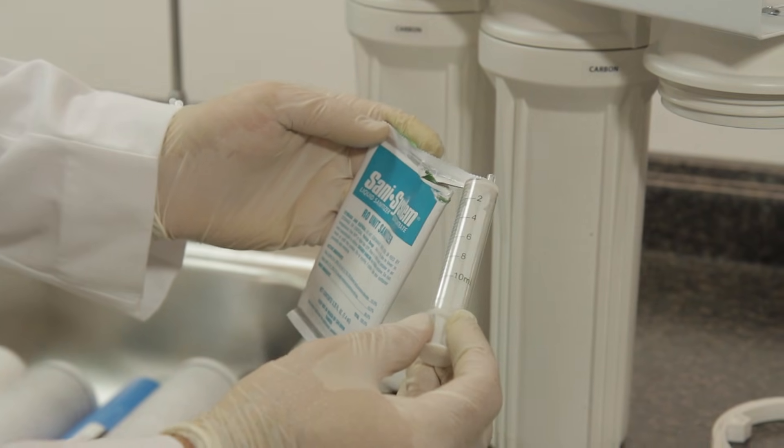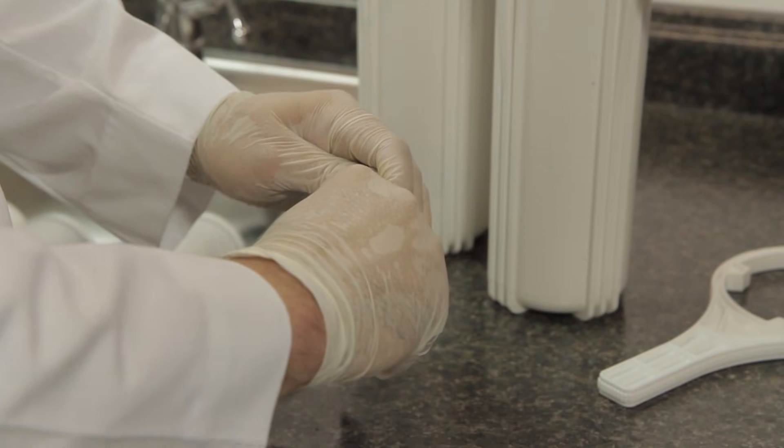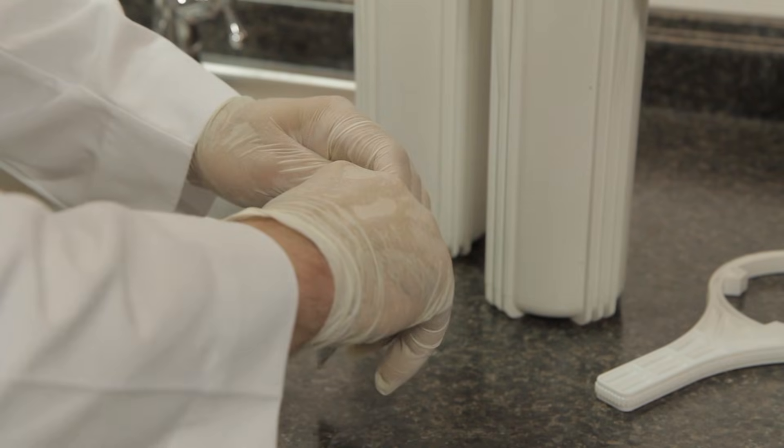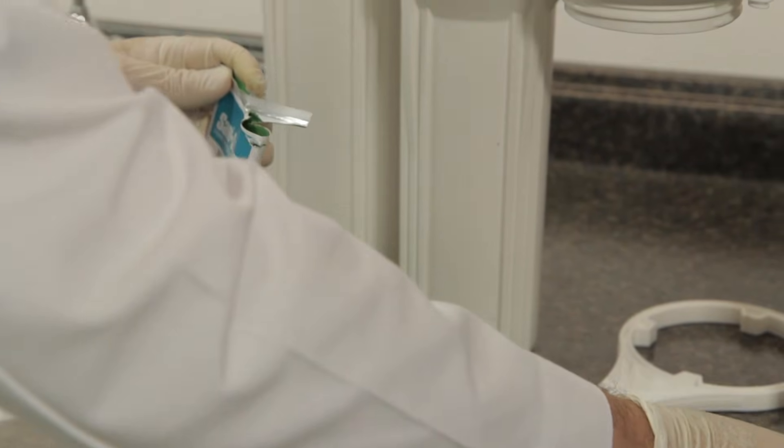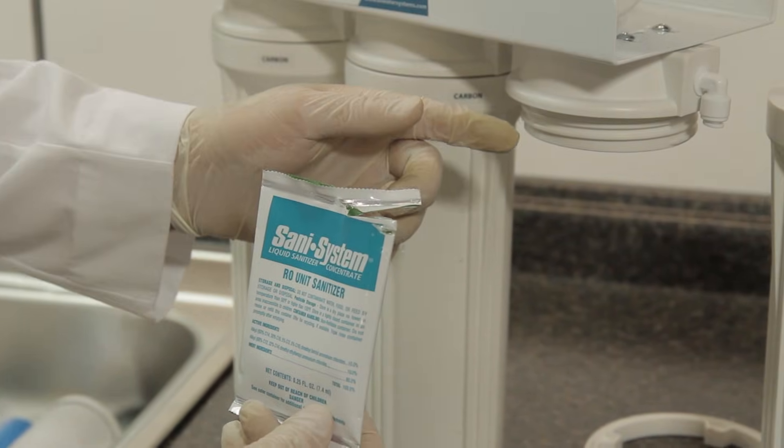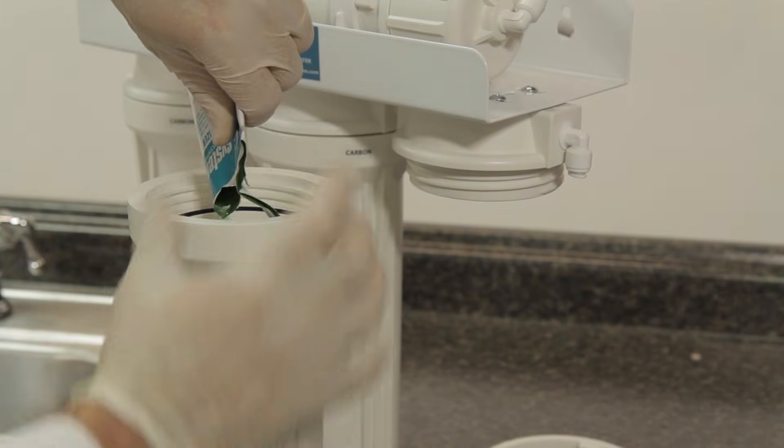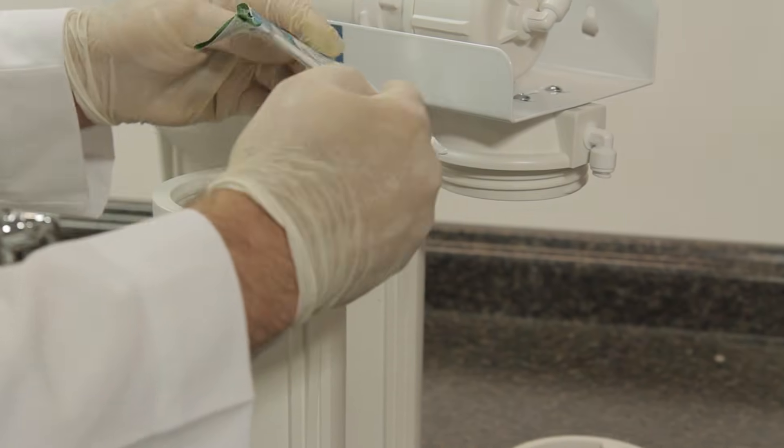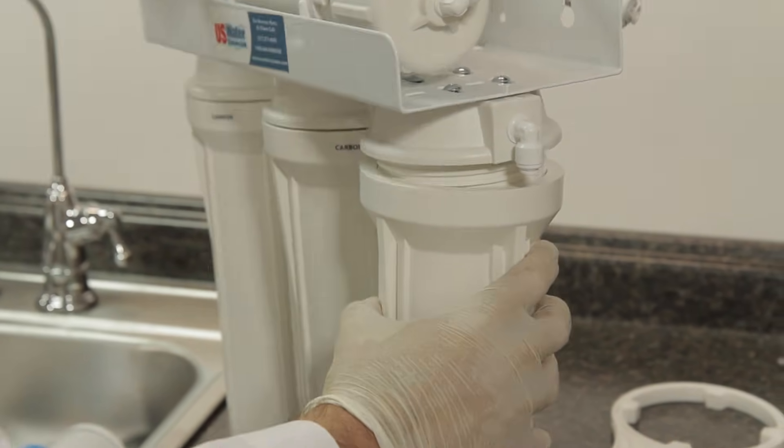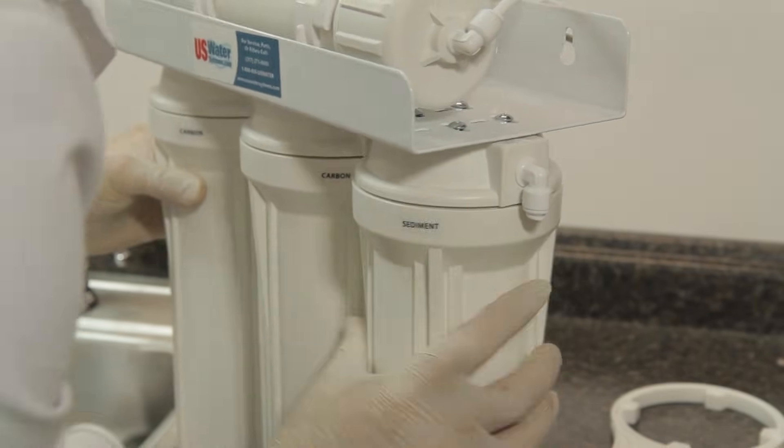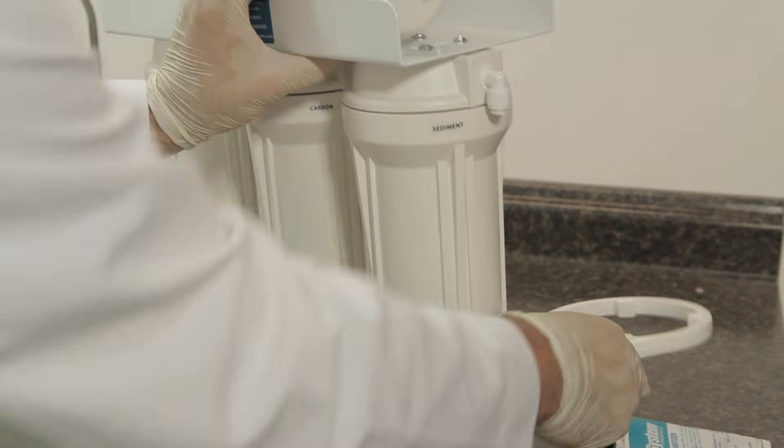We're going to withdraw five milliliters of Sani system in the included syringe. There we go, set that aside. Pour the remaining in the first sump that had the sediment filter in it. And then screw that back in and make sure it's snug.